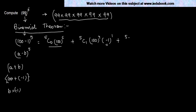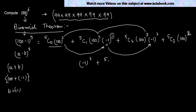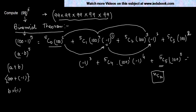Continuing: + 5C2 × 100^3 × (−1)^2. We reduce the power of 100 by 1 each time and increase the power of b (which is −1) by 1 each time — so the power of b goes 0, 1, 2... Then + 5C3 × 100^2 × (−1)^3, + 5C4 × 100^1 × (−1)^4, + 5C5 × 100^0 × (−1)^5.